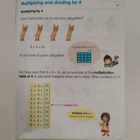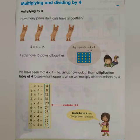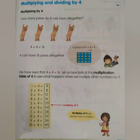Now let's look at multiplying and dividing by four. How many paws do four cats have altogether? Four times four — two front paws and two back paws — is sixteen. Four cats have sixteen paws altogether. Let's now look at the multiplication table of four. The multiples are always even numbers: four, eight, twelve, sixteen, twenty, twenty-four, twenty-eight, thirty-two, thirty-six, and forty.